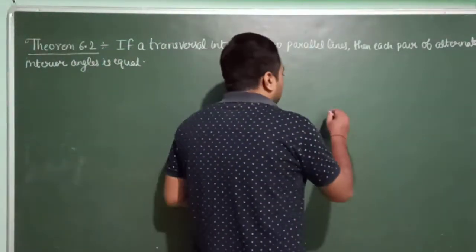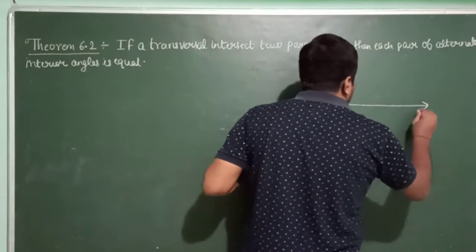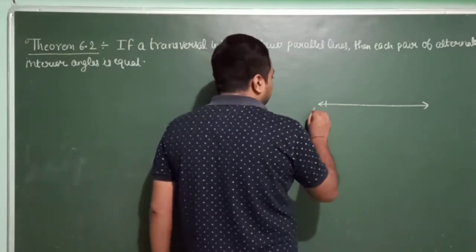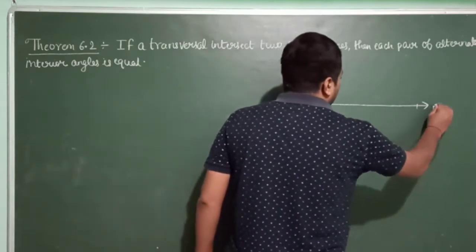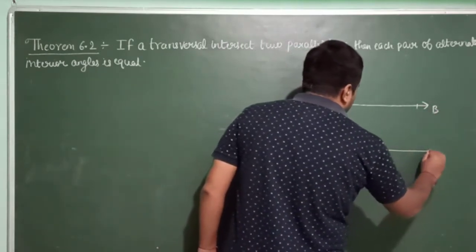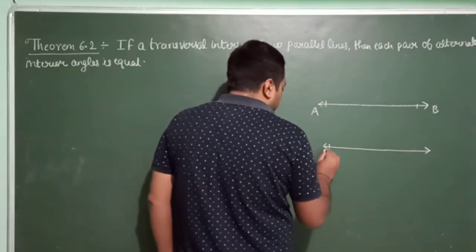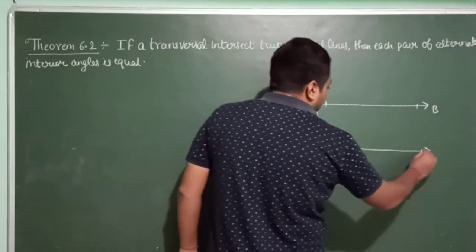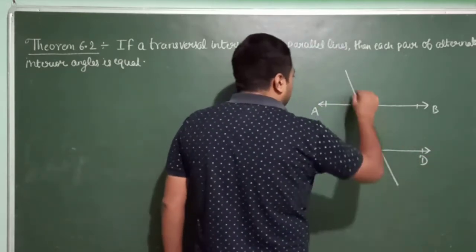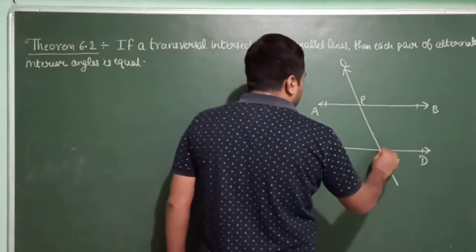Suppose these are the two parallel lines. The first line is AB and the second line is CD. These are the two lines which are parallel to each other, and they are intersected by a transversal L at points P and Q respectively.